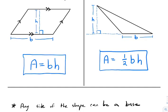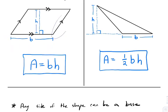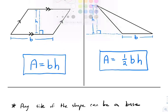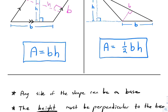A couple things to note: any side of this figure could be the base. Just because a side is on the bottom doesn't mean it has to be the base. I could have just as easily chosen a side on the side of this parallelogram as the base. The height I use must be perpendicular to the chosen base — so the base and the height must be perpendicular.